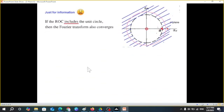And just for information, if the ROC includes the unit circle, so our unit circle is within the ROC, then the Fourier transform also converges. We'll see when we read the Fourier transform, or when we try to correlate Fourier transform with Z transform, then this is important.